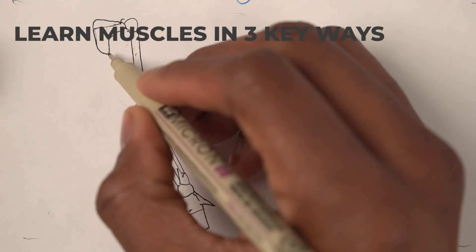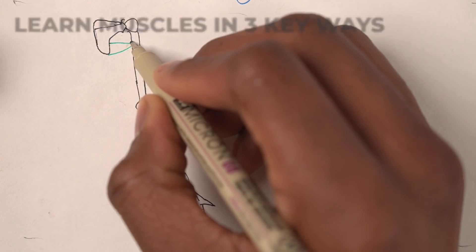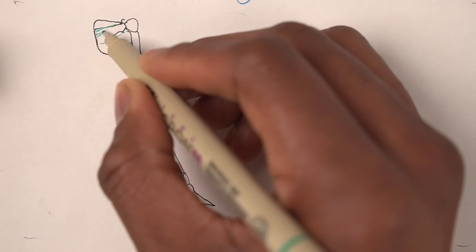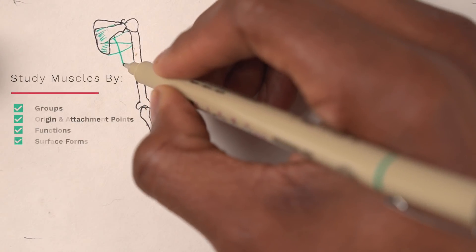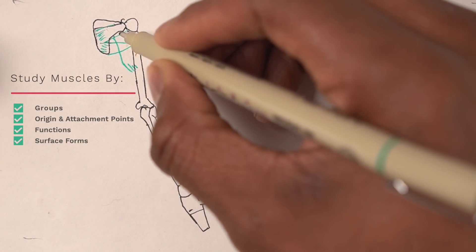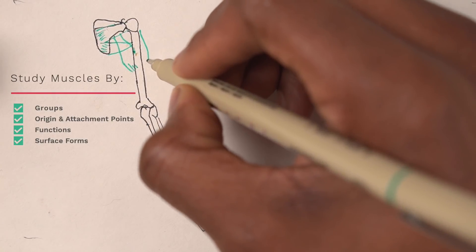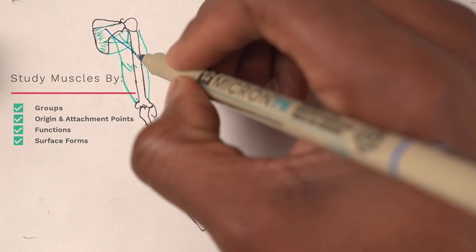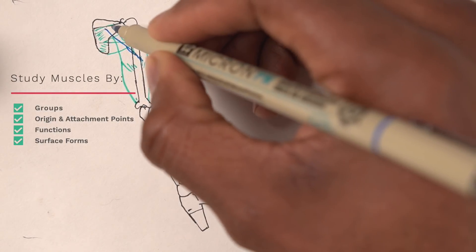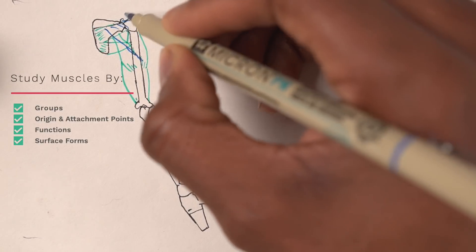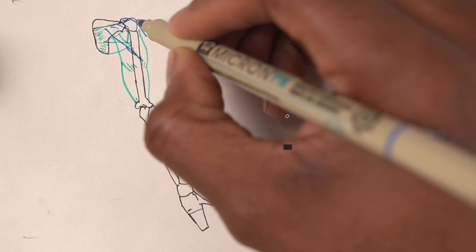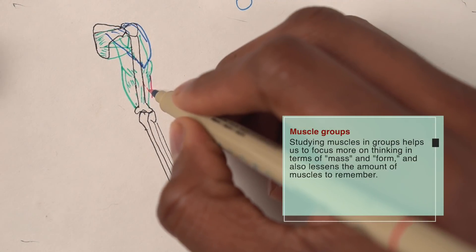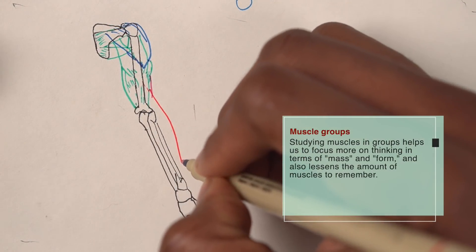Next, it's important to learn muscle groups and functions. There are lots of muscles, but as I said before, you don't need to know them all. Focus on learning muscles in terms of their groups, their functions, their origin and insertions, and their impact on surface form. You don't need to memorize every muscle or every muscle's name.